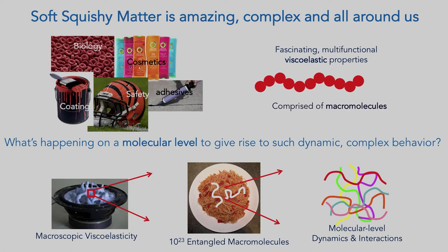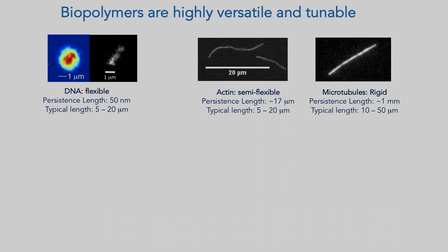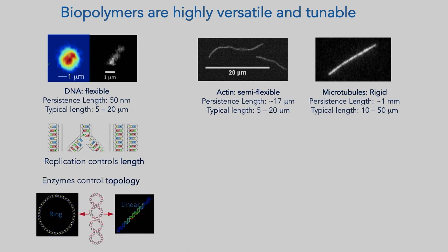We use biopolymers to answer these questions because biology has done a lot of work for us — it's very good at making polymers with very defined lengths, sizes, and properties. Three important biopolymers we use: DNA, which is fairly flexible, with a persistence length of about 50 nanometers, so you can have thousands of persistence lengths in a strand of DNA. Just by replication in cells, you can get very exact lengths ranging over orders of magnitude. You can also control the topology of DNA — not just linear strands, but supercoiled structures and ring structures.